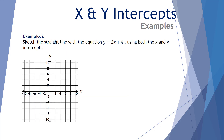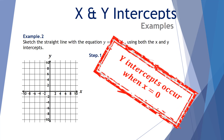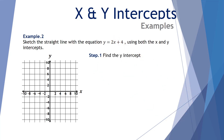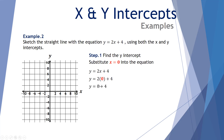Example number two: sketch the straight line with the equation y equals 2x plus 4 using both the x and y-intercepts. Step one, let's find the y-intercept. The y-intercept occurs when x equals 0. So let's substitute x equals 0 into our equation: y equals 2x plus 4. Where we've got an x, substitute in 0. So 2x becomes 2 lots of 0, which is 0, so y equals 0 plus 4, or y equals 4. The Cartesian coordinates for the y-intercept are (0, 4).